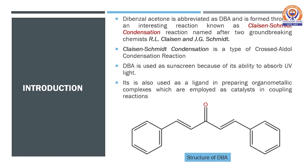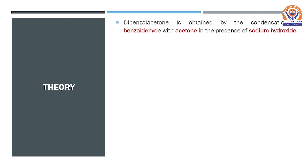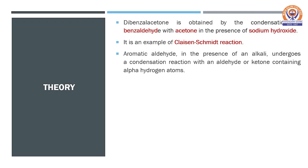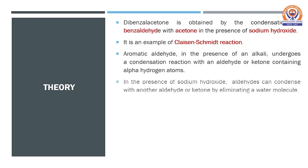The theory about the synthesis of DBA is that DBA is obtained by the condensation of benzaldehyde with acetone in the presence of sodium hydroxide base. It is an example of Claisen-Schmidt reaction. The aromatic aldehyde, benzaldehyde, used in the reaction in the presence of alkali undergoes condensation reaction with some aldehyde or ketone containing alpha hydrogen atoms, and here we have used the ketone acetone in the presence of sodium hydroxide.